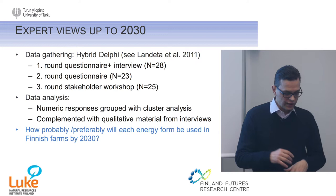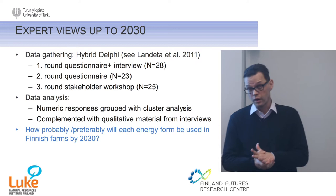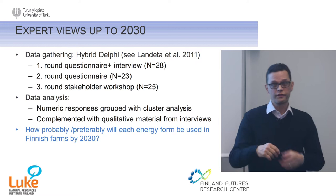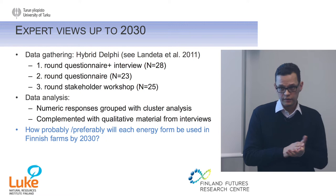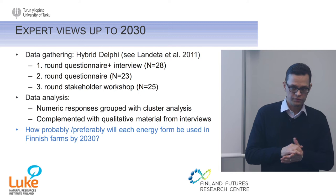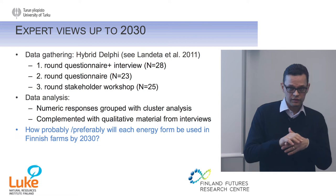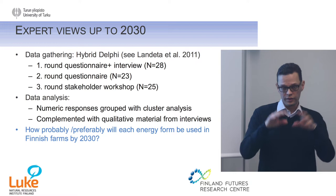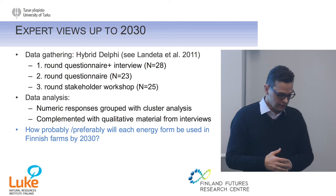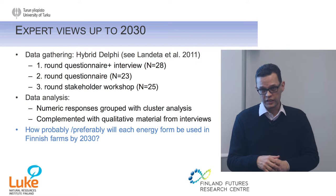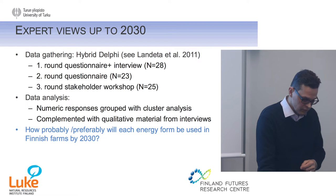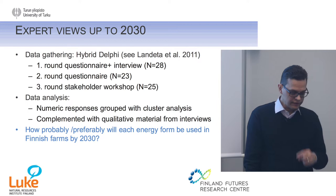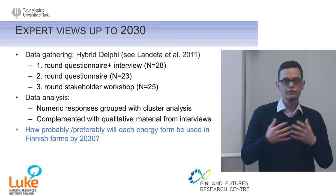We got 23 answers for that. And then the third one was a stakeholder workshop where people were discussing the scenarios and actually voting for the desirability and probability. This could be called a hybrid Delphi study. But what is important to note is that a Delphi study is not a poorly executed survey. There is no random selection of the participants — they are hand-picked. We are using specific criteria for picking up the experts, and having 25 to 30 experts is quite normal in Delphi studies. The numeric responses were grouped with cluster analysis, and then the qualitative material from interviews was used to enrich the scenarios.